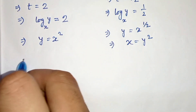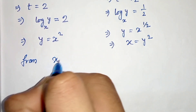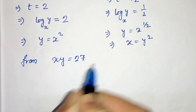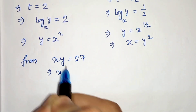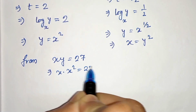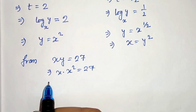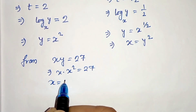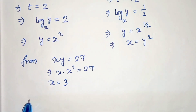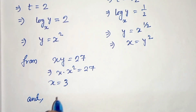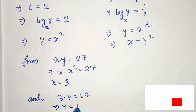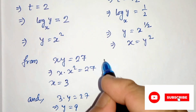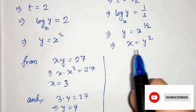From equation 2, xy equals 27. Substituting y equals x squared, we get x times x squared equals 27, so x cubed equals 27, giving x equals 3. Then 3 times y equals 27, so y equals 9.